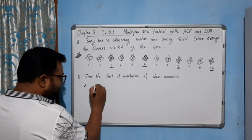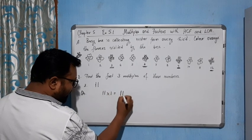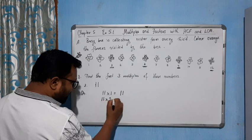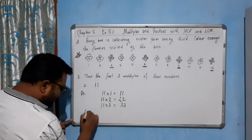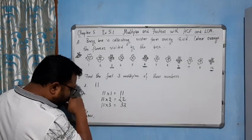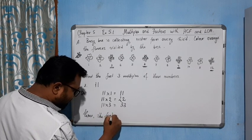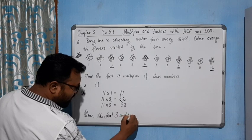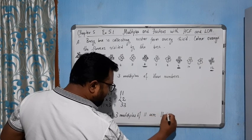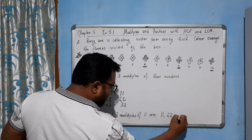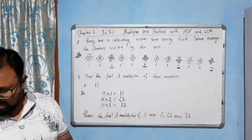Now come to the next question: 11. Solution — 11×1=11, 11×2=22, 11×3=33. Hence the first three multiples of 11 are 11, 22, and 33.